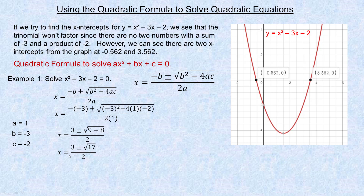Now if somebody asks you for the exact roots, that's the exact roots right there. The square root of 17 is a decimal that goes on forever, so the answers are going to be decimals — these are only approximations to 3 decimal places. The plus or minus means there are two different roots: 3 plus the square root of 17 over 2, and 3 minus the square root of 17 over 2.